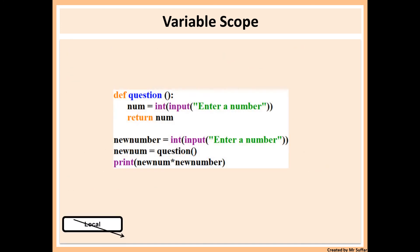For example, here we have a function called question. The local variable is num, because num is inside the function. Because it's inside the function, it means it's a local variable. Global variables are declared outside the function or procedure, which means that new number and new num are both global variables, because they're not inside any functions or procedure.